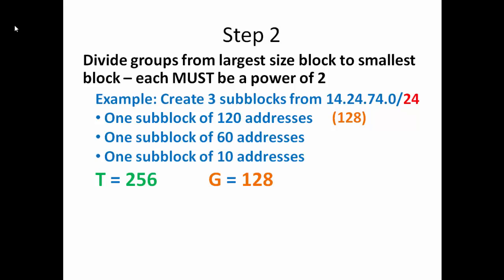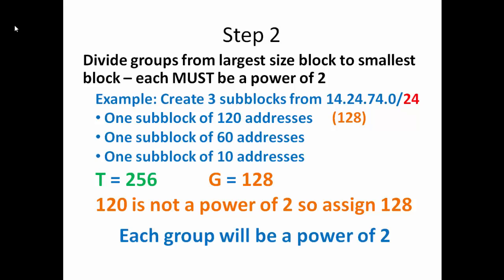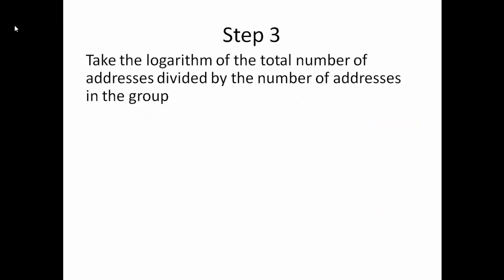So now we have our total number is 256, and our group number that we're working with, or G, is going to be 128. Notice again, 120 is not a power of 2, so we assign it to 128. Every single group, as we go through this and we solve each one, will be a power of 2. Our third step is the same as the third step before. We take the logarithm of the total number of addresses divided by the number of addresses in the group.